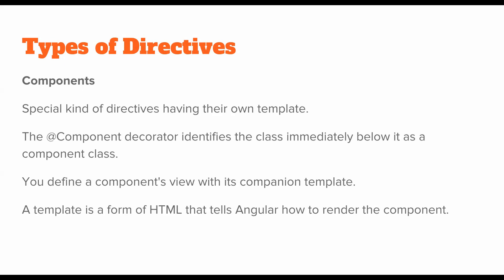Components are a special kind of directive. They are special because they are not used the way we use structural and attribute directives inside any other component or HTML element. Components have their own template attached to them, which is basically a form of HTML that defines how the component should be rendered. The class immediately after the component decorator becomes the component class, and we can use it to define properties, functions, and different kinds of behaviors.